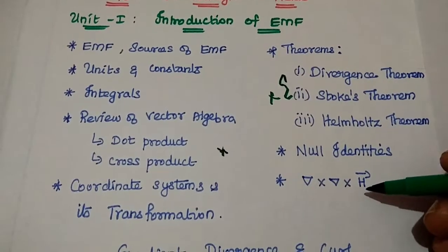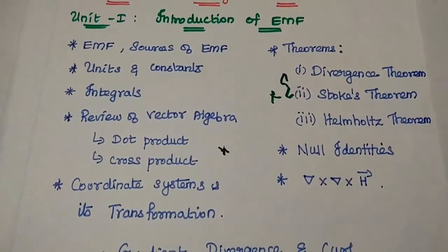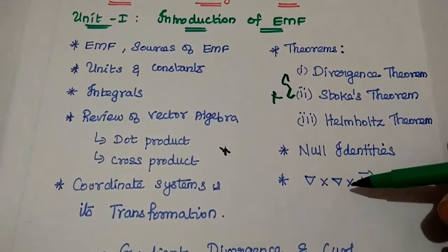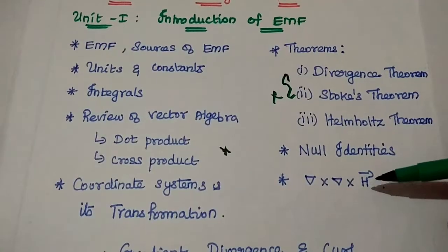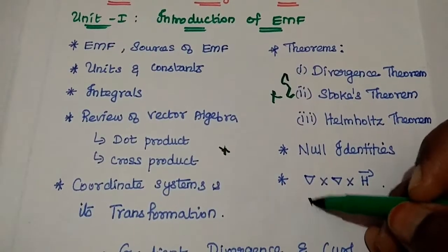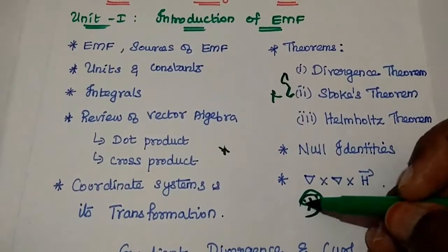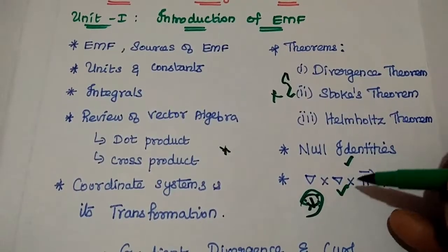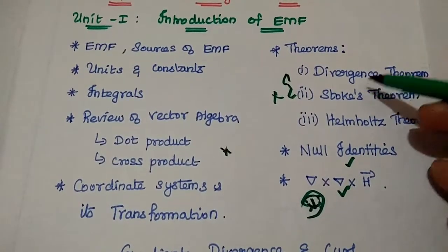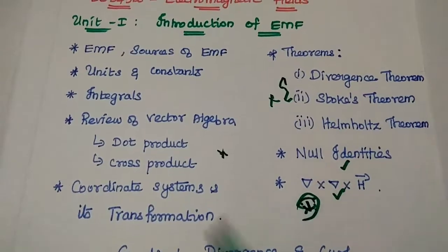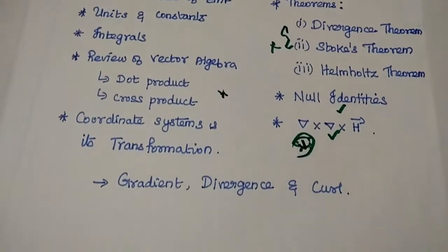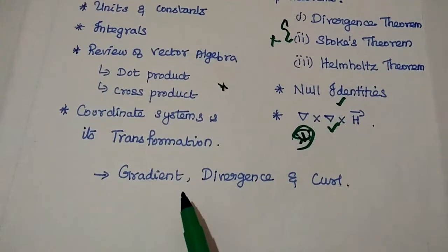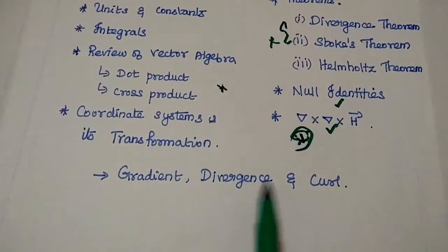This H can be anything — del cross del cross A vector or del cross del cross F vector, that is the curl of curl of any vector. This identity is very important. We can expect questions on null identities, this curl-of-curl identity, divergence theorem, and Stokes' theorem. Apart from that, other topics include gradient, divergence, and curl.